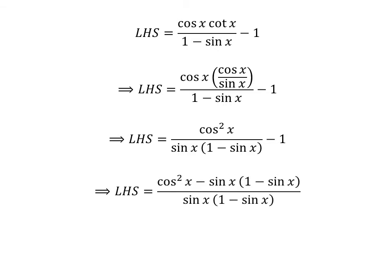Adding the fractions gives us the left hand side equal to the square of cosine of x minus sine of x times 1 minus sine of x, all upon sine of x times 1 minus sine of x.